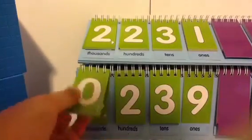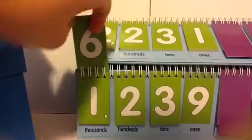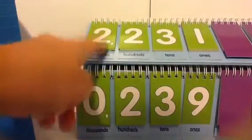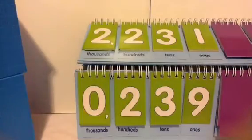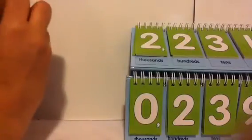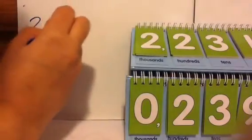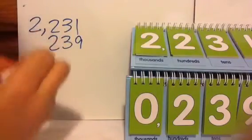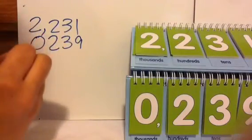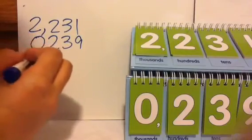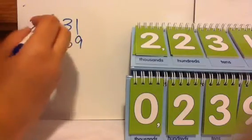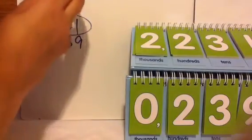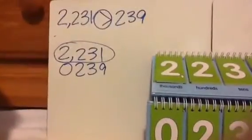239 is lacking thousands blocks entirely. When you write them aligned by place value, you can tell immediately: zero thousands blocks versus two thousands blocks — 2,231 is the larger number, just like that.